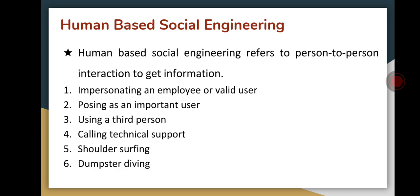The sixth method is dumpster diving. It involves looking in trash bins, dustbins, or recycle bins for information written on pieces of paper or computer printouts — such as passwords and file names. It also includes searching through discarded media like tapes, discs, or papers to acquire sensitive data without authorization.